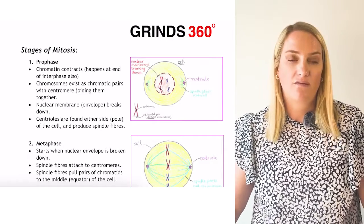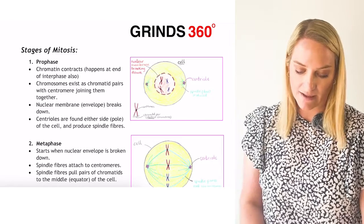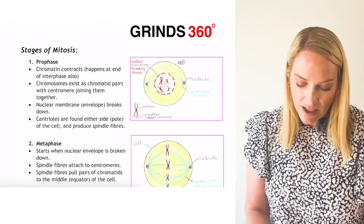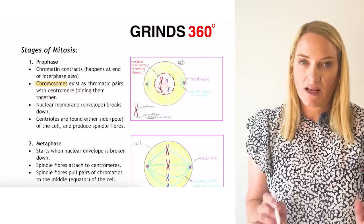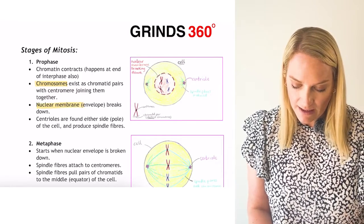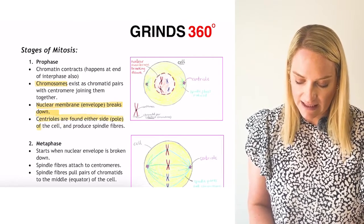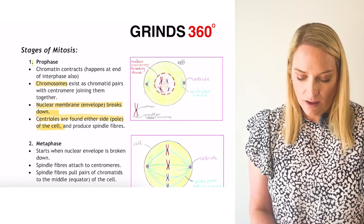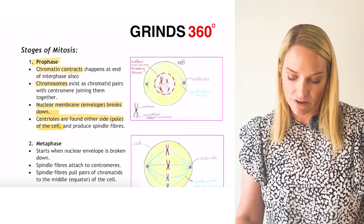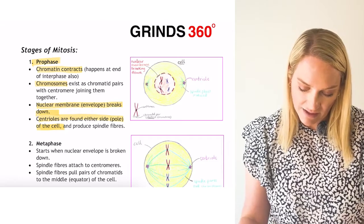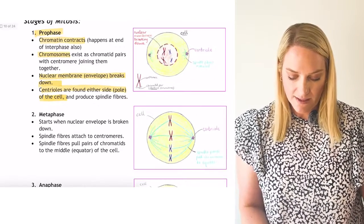In prophase, the chromatin has contracted and is now visible as chromosomes appearing as chromatid pairs. The nuclear membrane has broken down. Centrioles are found at either side of the cell at the poles. You need to be able to draw prophase, recognize it, and explain what is happening.